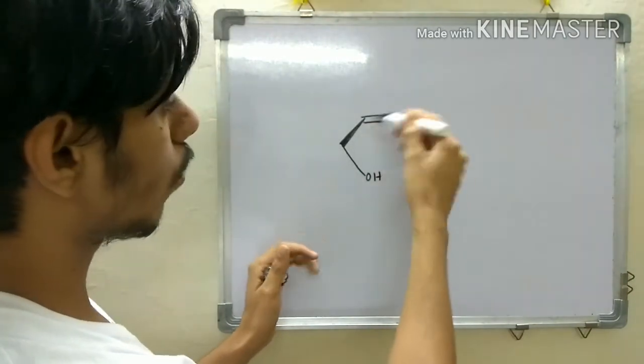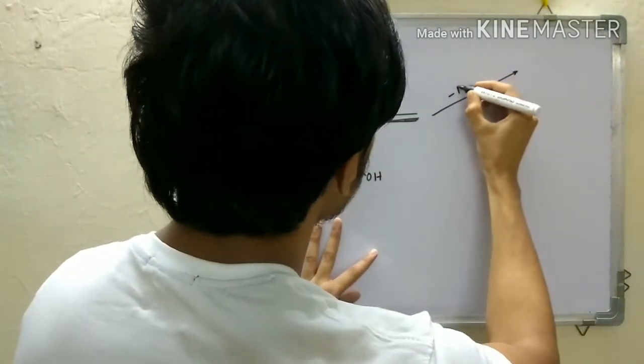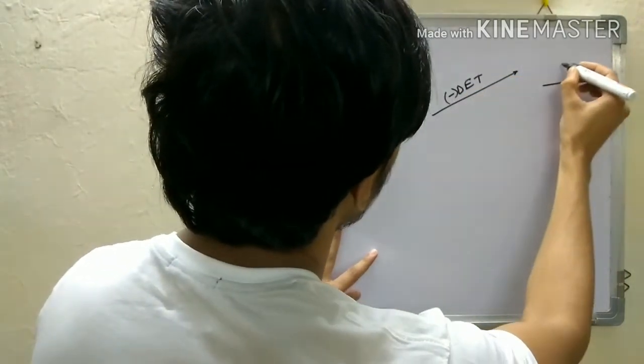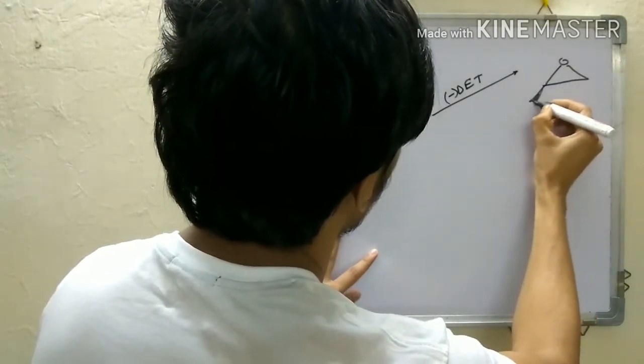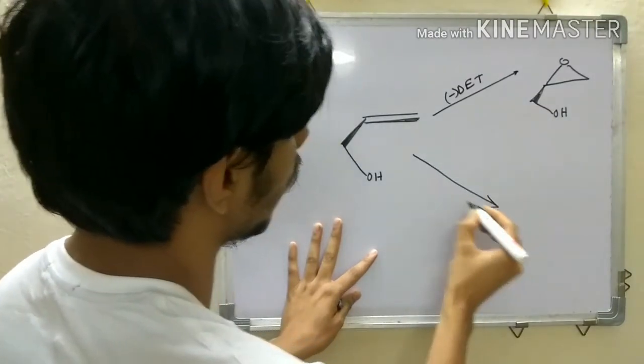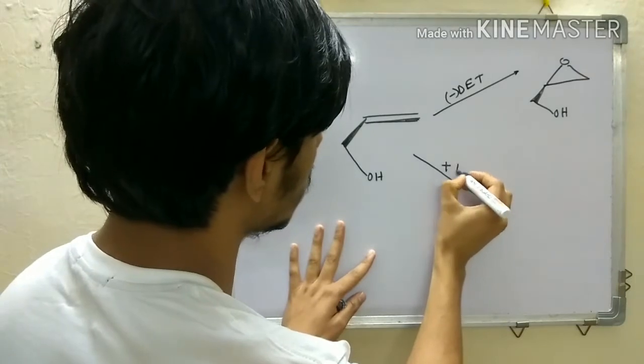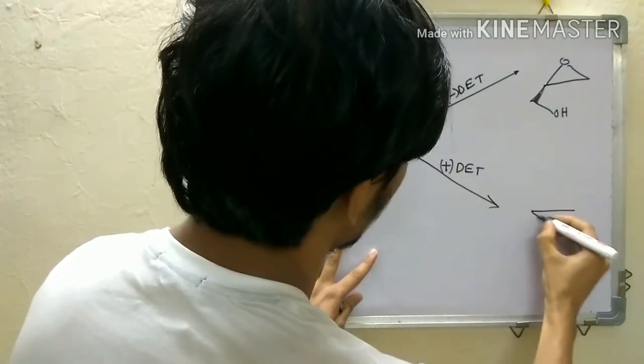Now, when you are watching this alkene like this, and if you add minus DET—that is minus diethyl tartrate—you will be getting epoxide above. In the same configuration, if you add plus DET, you will be getting epoxide below.